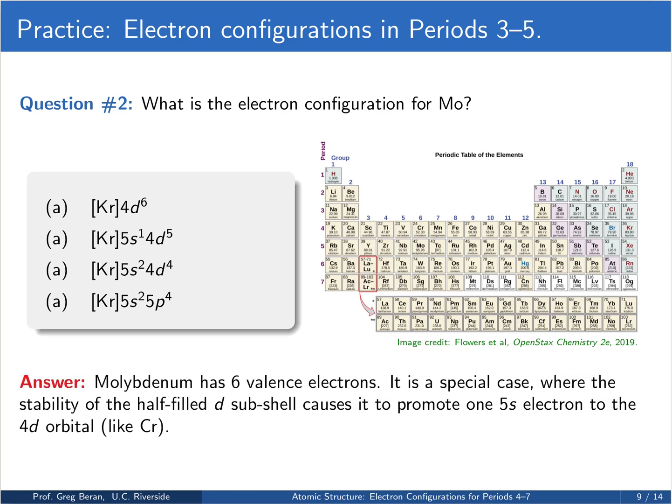So molybdenum is like chromium. It has 6 valence electrons. Naively, you might expect it to have a 5s2 4d4 configuration, but that's not correct because we get this special stability by having the half-filled 4d shell. So we promote one electron from the 5s up to the 4d to give us a 5s1 4d5 configuration.